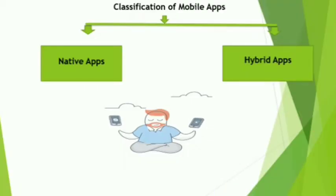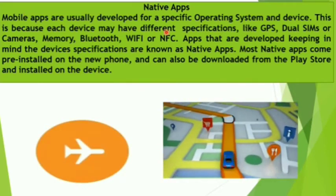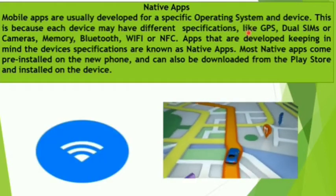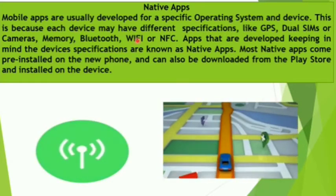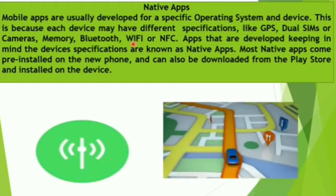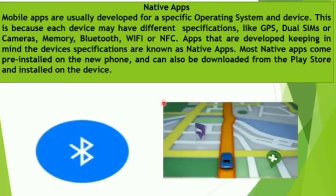Classification of mobile apps. Mobile apps are classified into two types: native apps and hybrid apps. Native apps are mobile apps usually developed for a specific operating system and device. Each device may have different specifications like GPS, dual SIMs, camera, memory, Bluetooth, Wi-Fi, or NFC. Apps developed keeping in mind a device's specifications are known as native apps. Most native apps come pre-installed on new phones and can be downloaded from the play store and installed on the device.